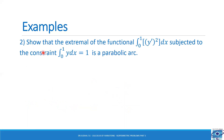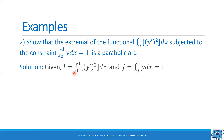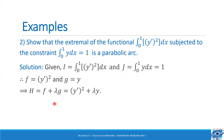Show that the extremal of the functional I = integral from 0 to 1 of y'² dx, subjected to the constraint integral from 0 to 1 of y dx = 1, is a parabolic arc. We need to find the extremal and show that it represents a parabola. Given f = y'² and g = y, we form the new function H = f + λg = y'² + λy.